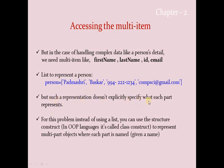The representation does not explicitly specify what each part represents. I cannot easily tell the user that index value 0 is the first name and index value 1 is the last name by giving such instructions. This is not easy and not advisable. The solution is to use a structure construct to represent multi-part objects where each part is named — instead of index numbers 0, 1, 2, 3, I can label a name, which is only possible through a class.